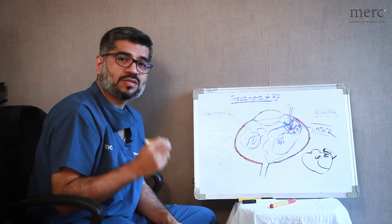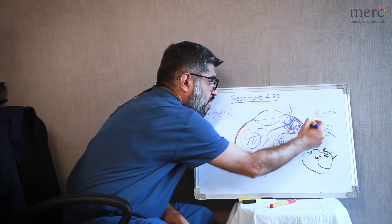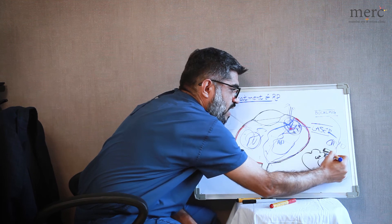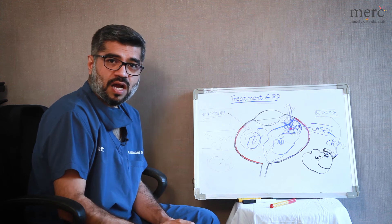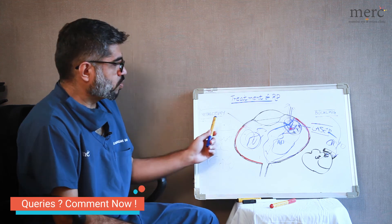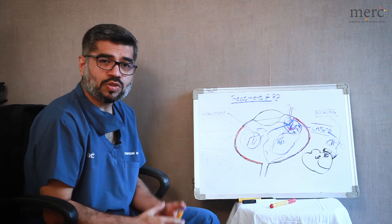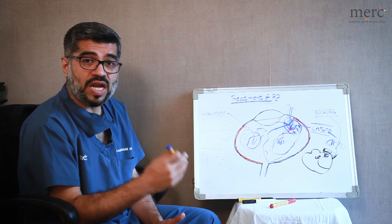So buckling surgery has two important steps only. One is cryo and second is placement of the buckle so that it closes the retinal tear formation. So these are two simple procedures or two most commonly performed procedures for retinal reattachment.